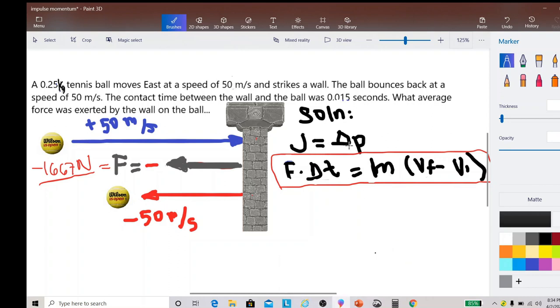We have now the solution using the impulse momentum theorem. We have J equals delta P, which is the impulse is equal to the change in momentum. The impulse has a formula equal to the force times delta T, and the change in momentum is equal to the mass multiplied by the change in velocity, which is the final velocity minus the initial velocity.